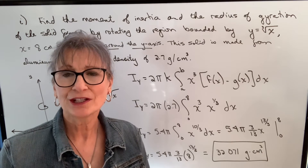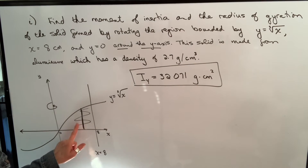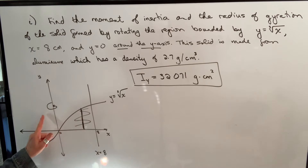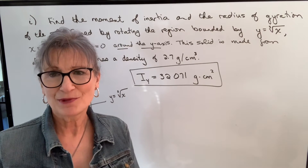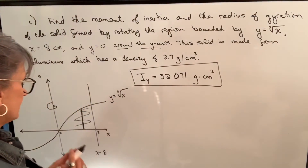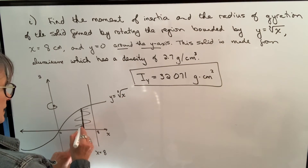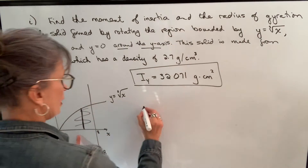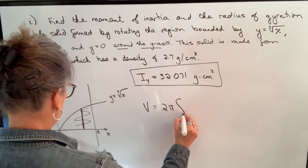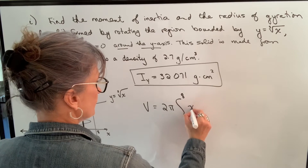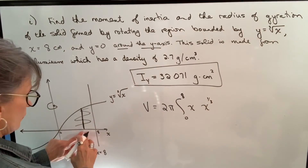Let's find the radius of gyration. In order to do that, I need to find the mass, and in order to do that I need to find the volume. Now there are two options for finding this volume: I could use the shell method with vertical rectangles, or I could use horizontal rectangles and the washer method. My advice is to use the same method you used to find moment of inertia. We're already working with a vertical rectangle, so I'm going to use the shell method. The formula for volume using the shell method is 2 pi times the integral from 0 to 8 of the radius, which is x, times the height, which is the cubed root of x, minus 0, dx.